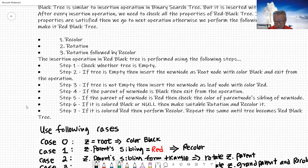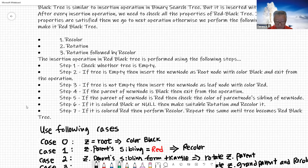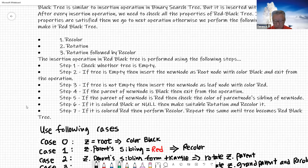Step three: if the tree is not empty, insert the new node as a leaf node with the color red. If the parent of the new node is black, then exit. If the parent of the new node is red, check the color of the parent node's sibling — the uncle or aunt. If it is color black or nil, then make a suitable rotation and recolor it.